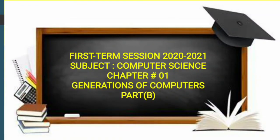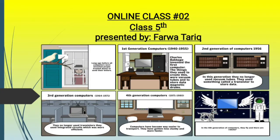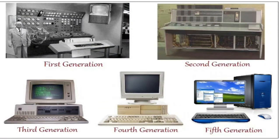Good morning students and welcome back to your online class of computer science. This is our second class of chapter number one. Let's continue from where we left. In our first lecture we discussed about the first two generations of computers composed of transistors and vacuum tubes. Today we will talk about the rest three generations of computers, their basic components, characteristics, advantages, and disadvantages.